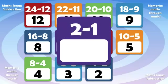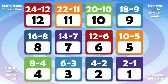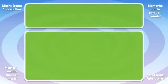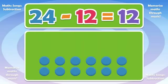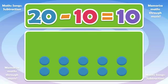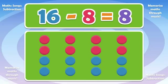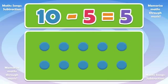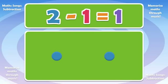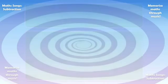2 minus 1 is 1. Let's try it again — watch the dots. 24 minus 12 is 12, 20 minus 10 is 10, 16 minus 8 is 8, 10 minus 5 is 5, 4 minus 2 is 2, 2 minus 1 is 1. All right!